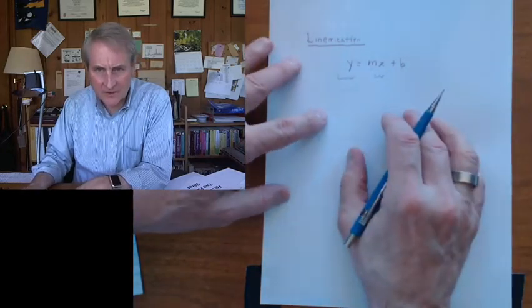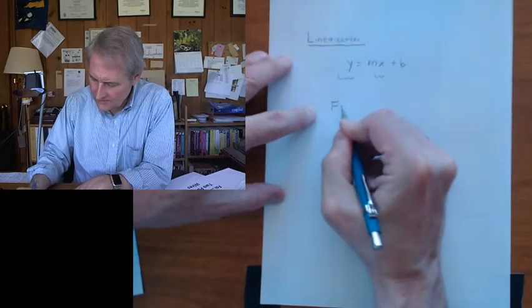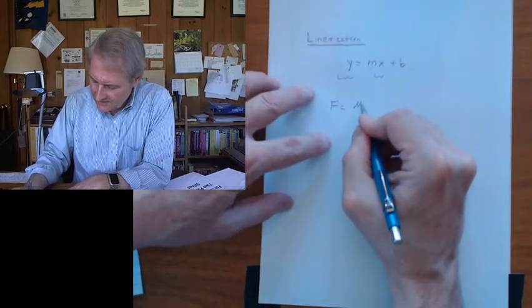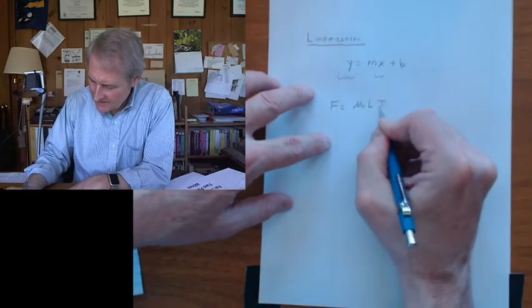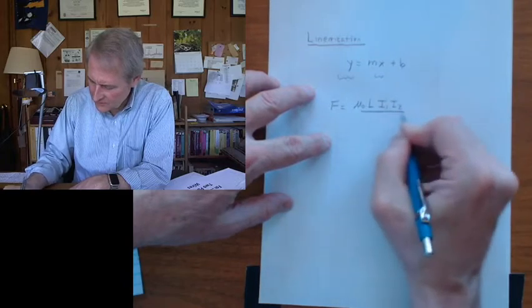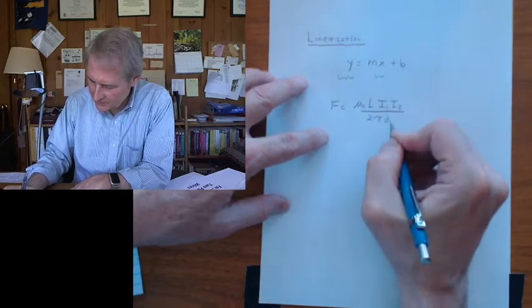So the equation that we want, you've seen before, mu naught l i1 i2 over 2 pi, distance between the wires.